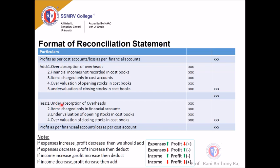Items to be deducted in the reconciliation format: Under absorption of overheads — overheads are expenses, so under absorption means expenses have come down, profit increases, therefore deduct it. Items charged only in the financial account — the cost accountant will not know these, so they have to be minused. Undervaluation of opening stock in cost books and overvaluation of closing stock in cost books are also to be deducted. Finally, the result gives the profit as per financial accounts or loss as per cost accounts. This is the format to work out the reconciliation statement of cost and financial accounts.